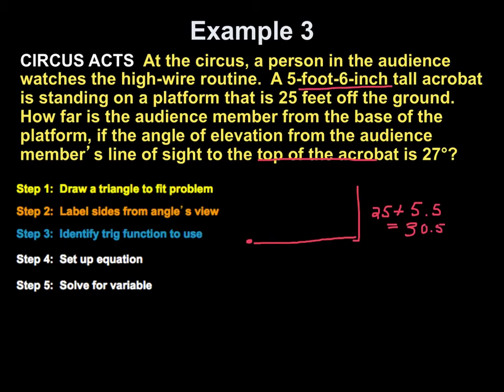So, really this height or this side is equal to 30.5 total because I'm including the platform plus the acrobat. And the line of sight, the angle of elevation from the audience member, which is the dot, to the top of the acrobat is 27 degrees. And the question is, how far is the audience member from the base of the platform, which is here where my right angle is, to the audience member, that's my x.